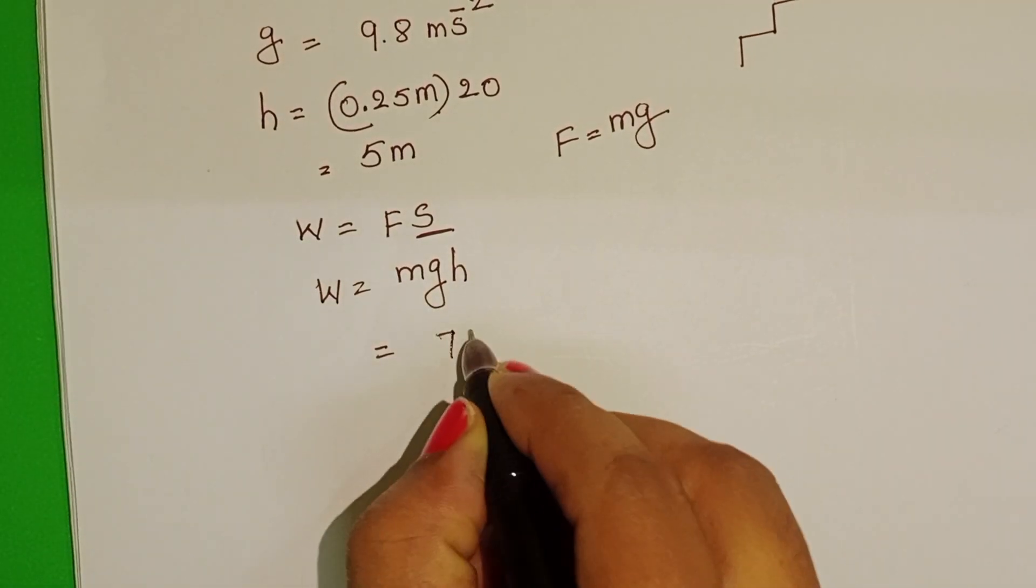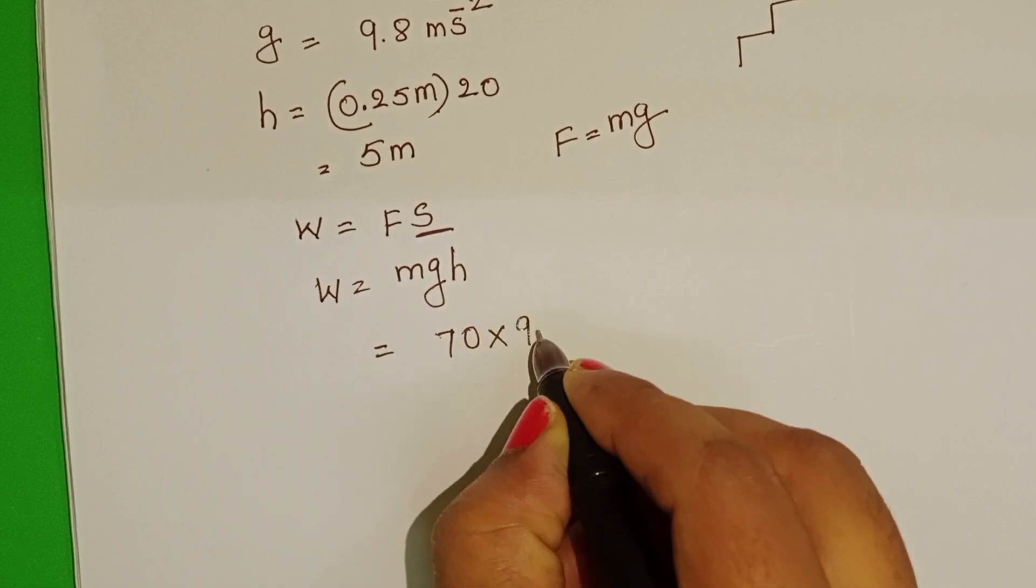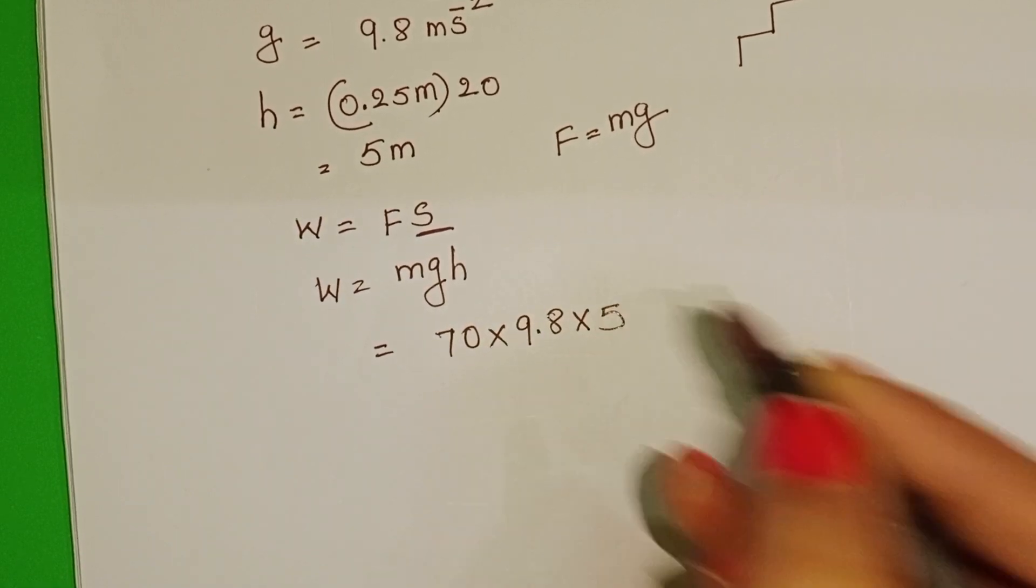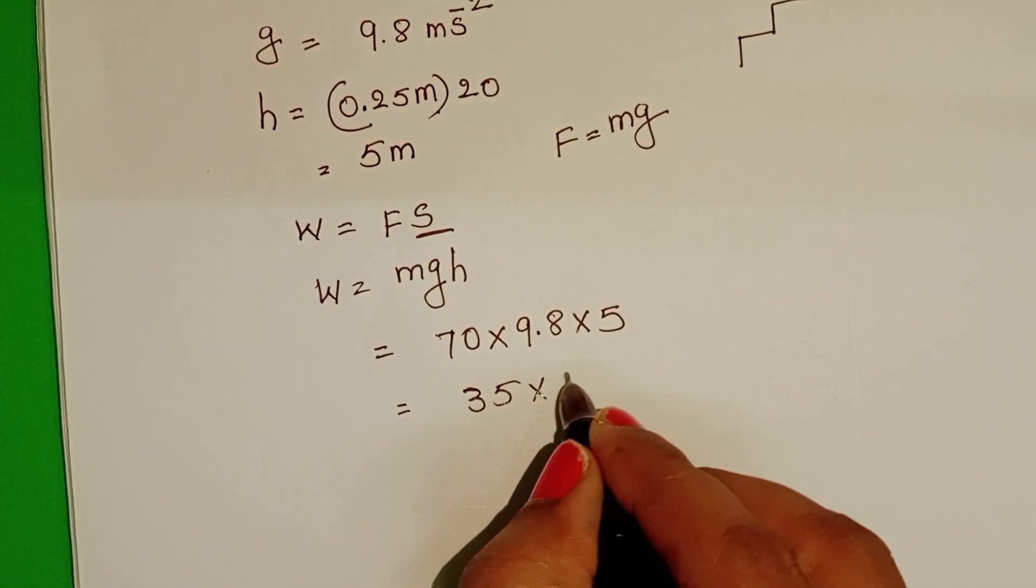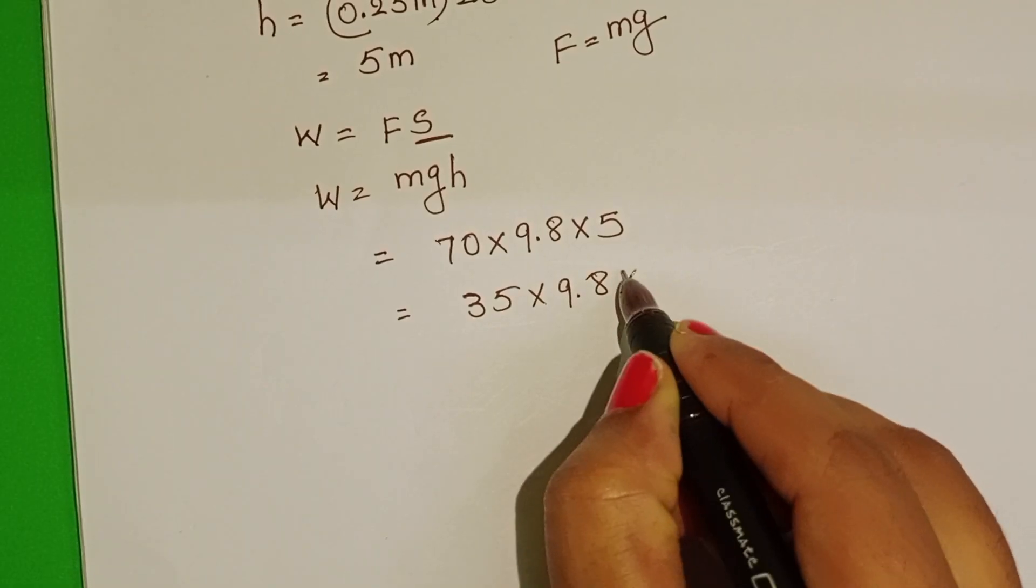Mass 70, acceleration due to gravity 9.8, and height is 5. That gives us 35 into 9.8 into 10.